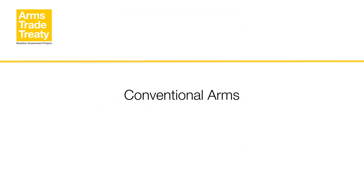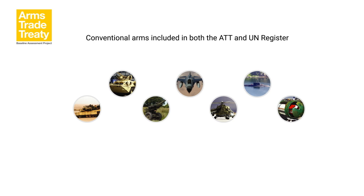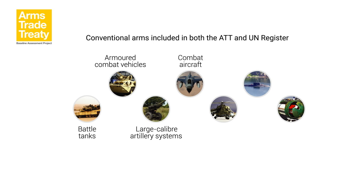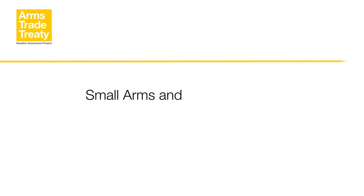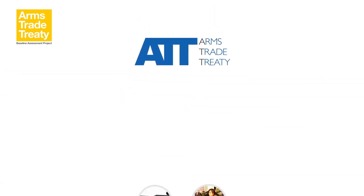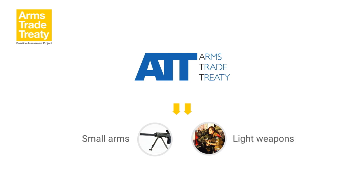Conventional arms: The arms trade treaty requires states' parties to include their exports and imports of conventional arms in their annual reports. The categories of weapons included in the ATT mirror those categories included in the UN Register. The seven categories of conventional arms included in both instruments are: battle tanks, armoured combat vehicles, large calibre artillery systems, combat aircraft, attack helicopters, warships, and missiles and missile launchers. The ATT requires states to report their imports and exports of small arms and light weapons. The UN Register did not include reporting on small arms and light weapons until 2016, when the group of government experts recommended that states report on SALW transfers alongside the existing seven categories of conventional weapons covered by the Register.